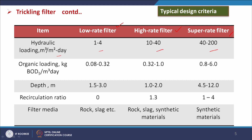Organic loading in kg per cubic meter per day is 0.08 to 0.32 for low rate, 0.32 to 1.0 for high rate, and 0.8 to 6 for super rate — so the organic loading rate is very high. Depth ranges are 1.5 to 3 meters for low rate, 1 to 2 meters for high rate, and 4.5 to 12 meters for super rate. Recirculation ratio is more in the super rate filter, lower for high rate, and negligible for low rate.